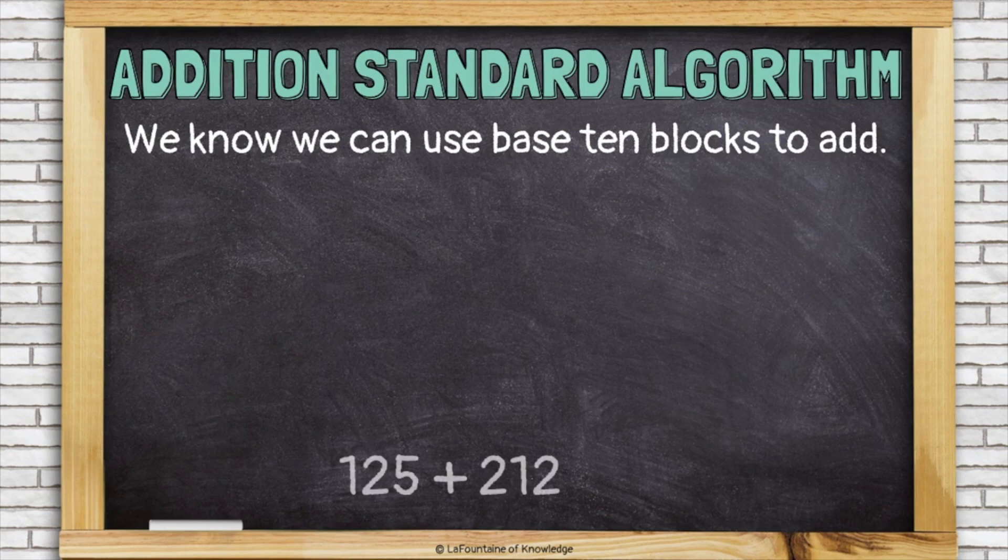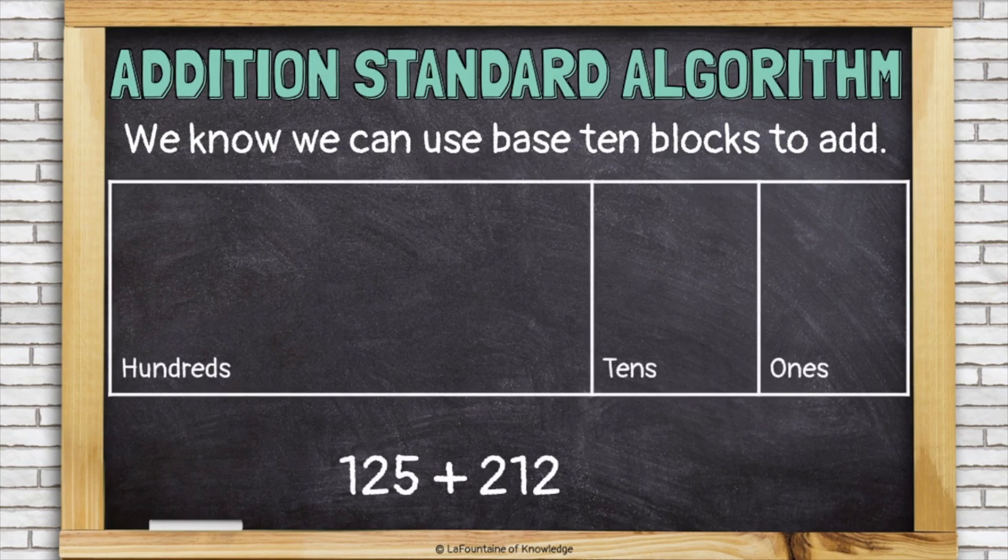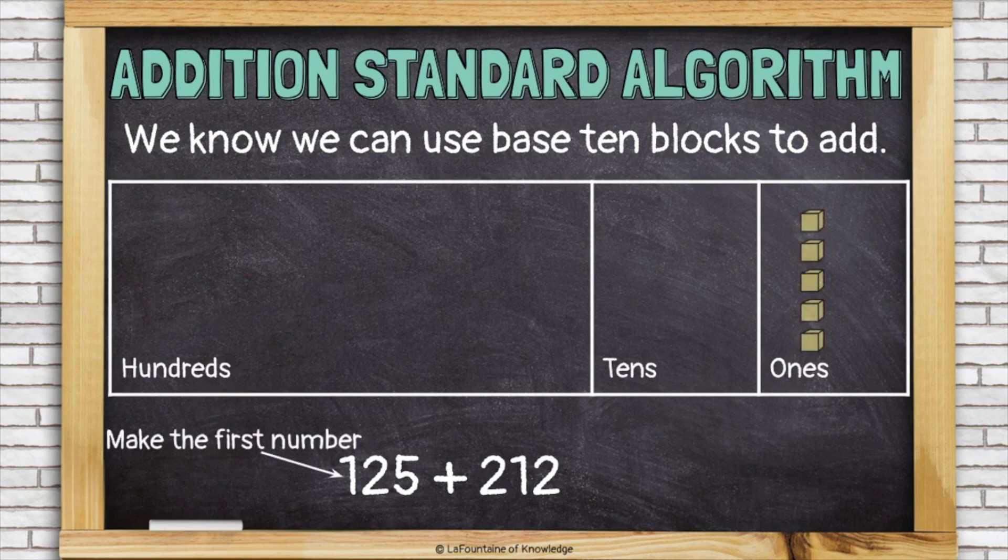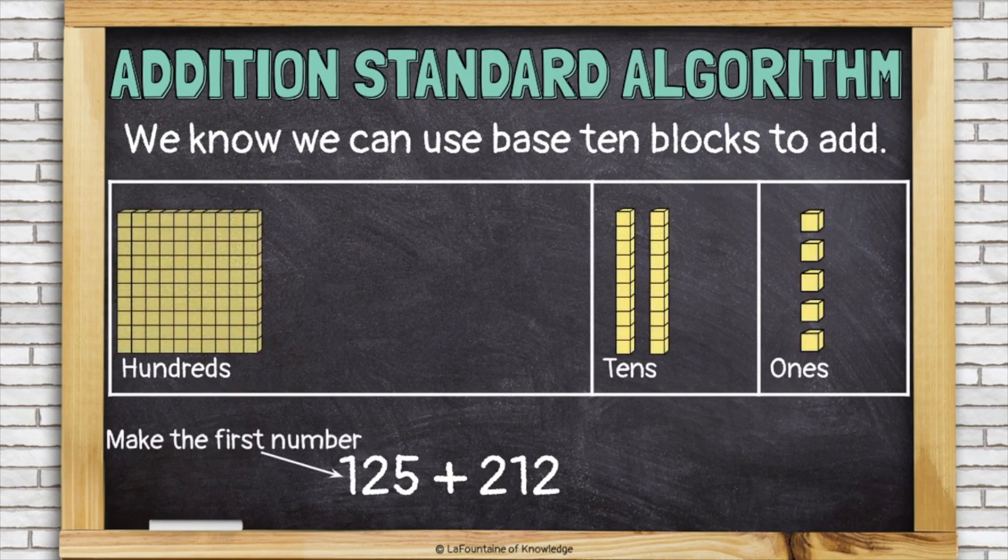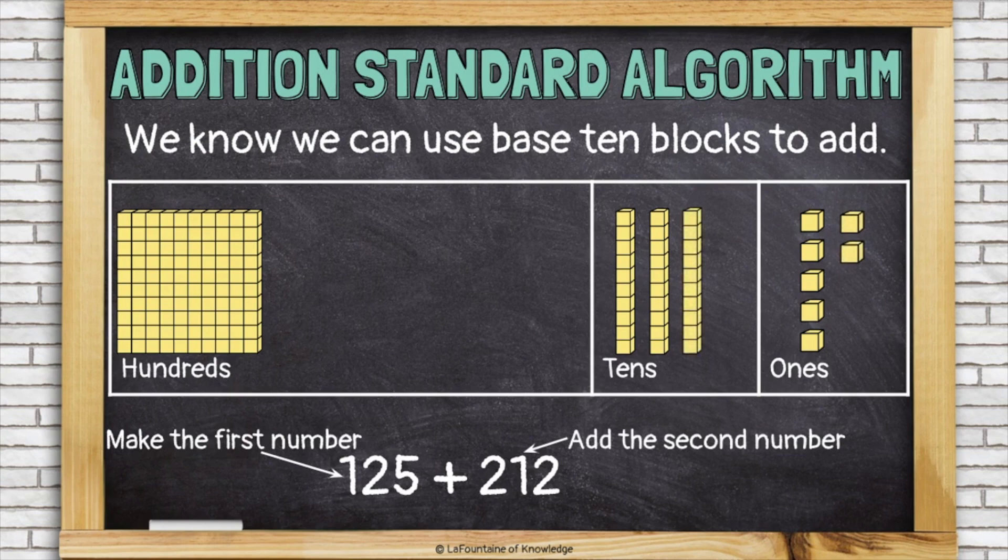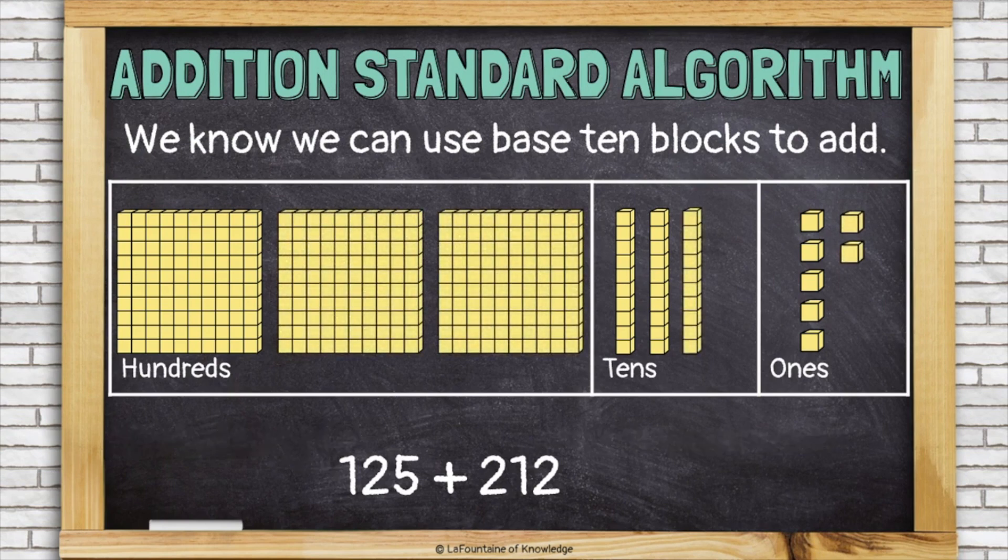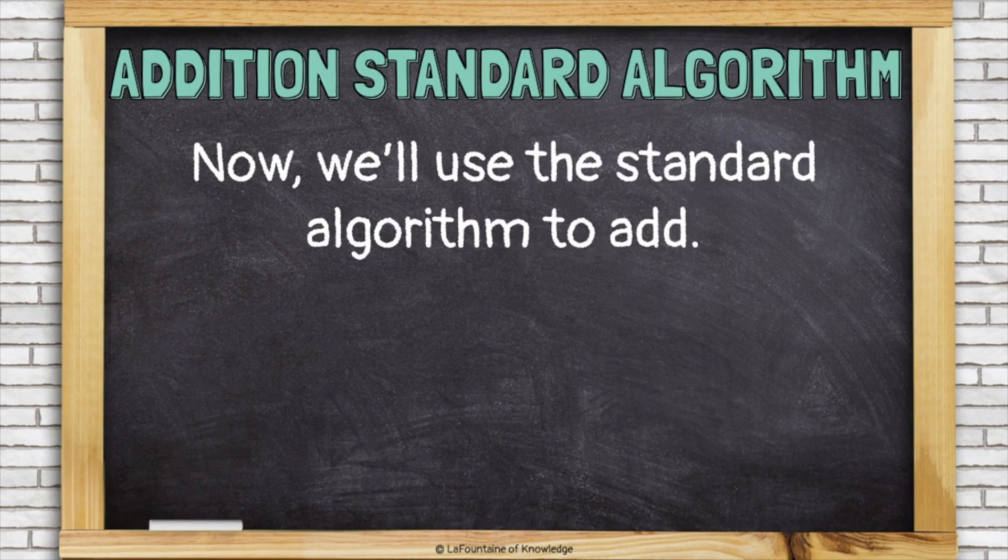Numbers like 125 plus 212. First I'll make the first number with five ones, two tens, and a hundred. Then I'll add the second number to it. I need two more ones, one more ten, and two more hundreds. I can look at the blocks to see that my answer is 337.